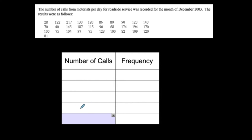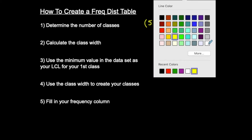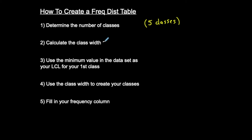For this example, we want five classes, so I have five rows. Now, step two: calculate the class width. Once you determine the number of classes — which you're going to be told — to find your class width, you're going to take the maximum data value minus the minimum data value and divide by the number of classes. This is how you find your class width after I tell you the number of classes.